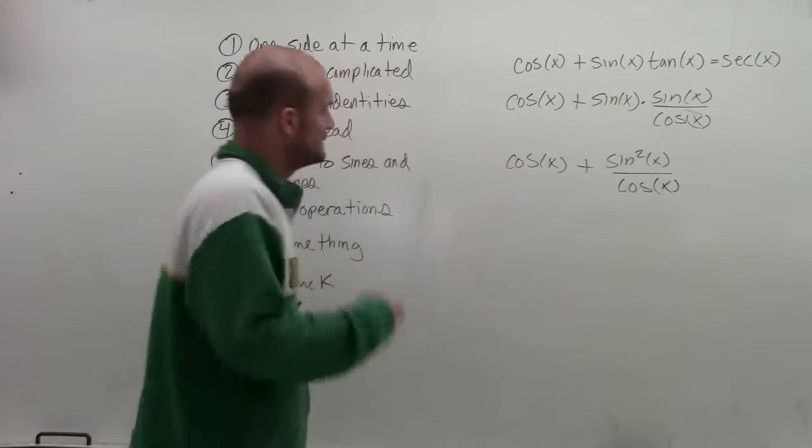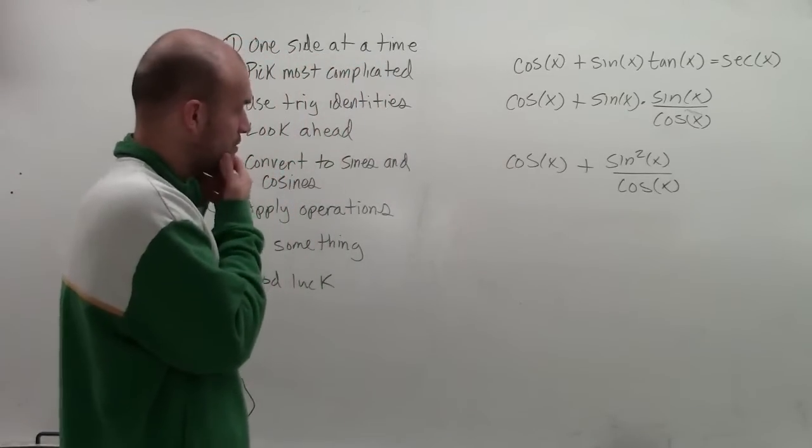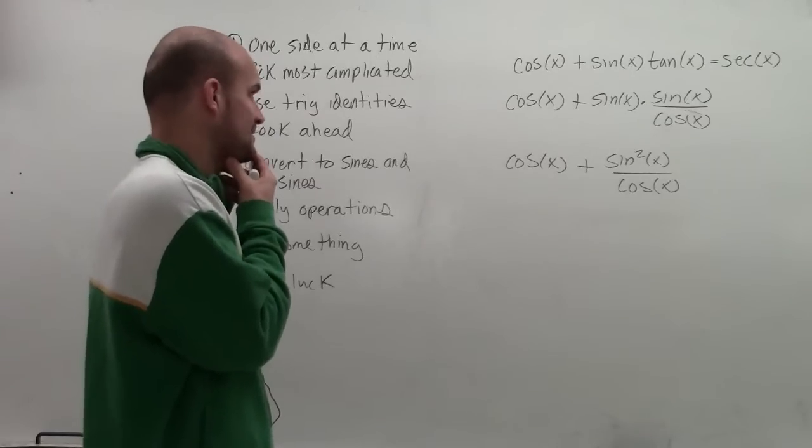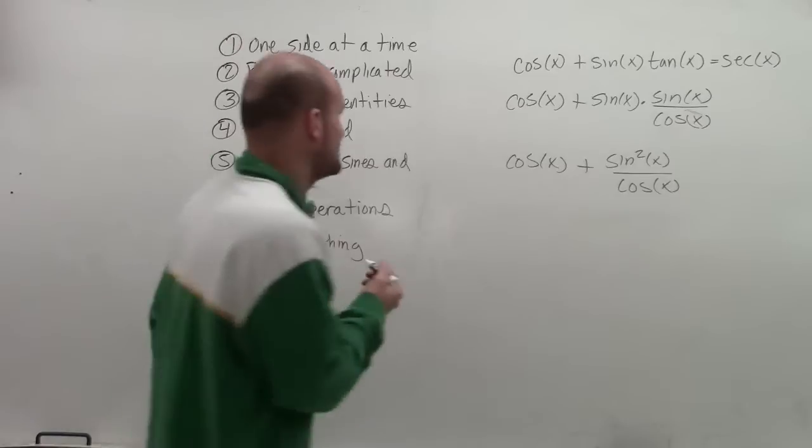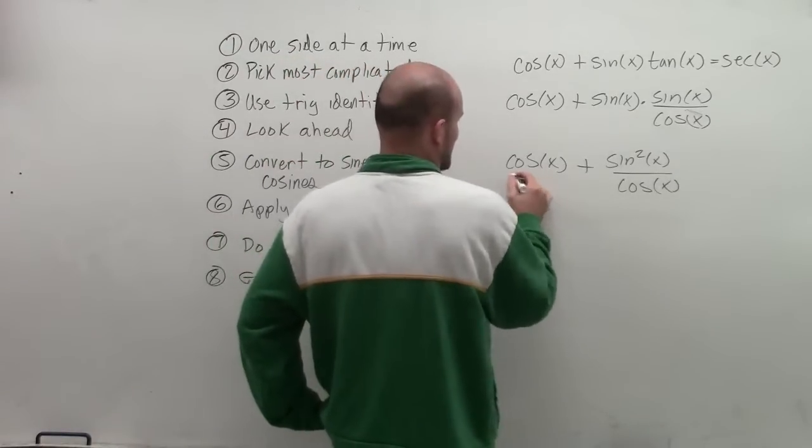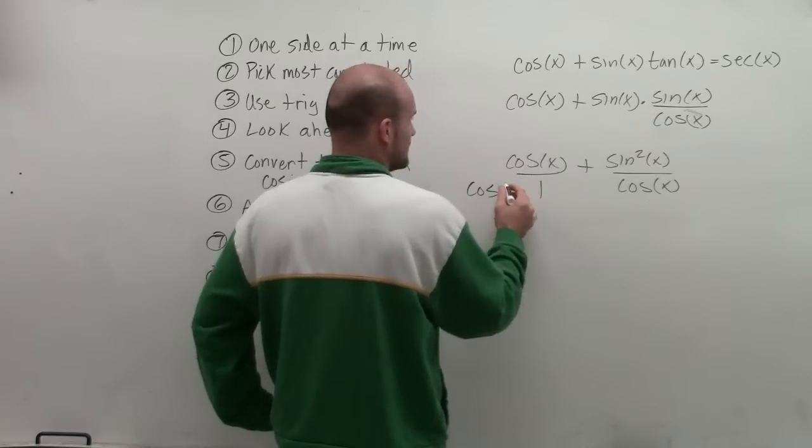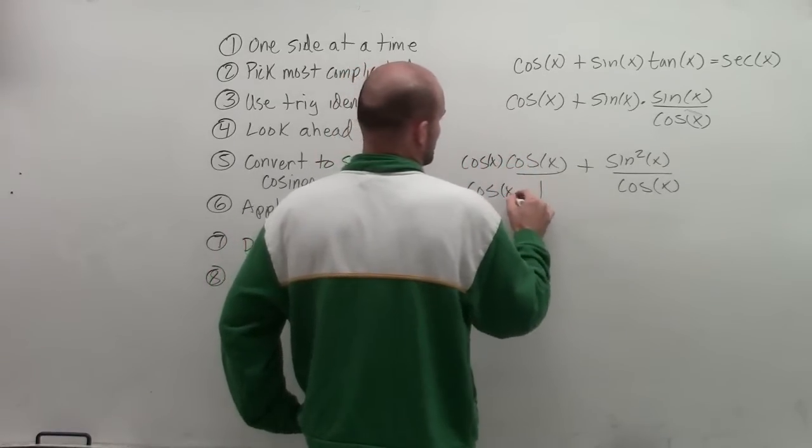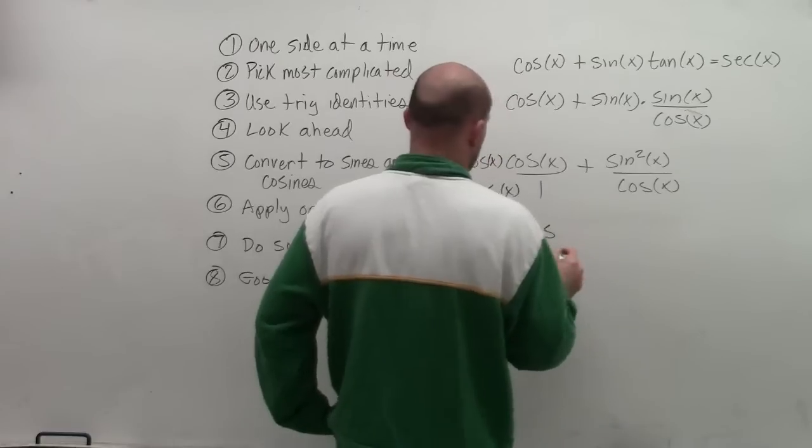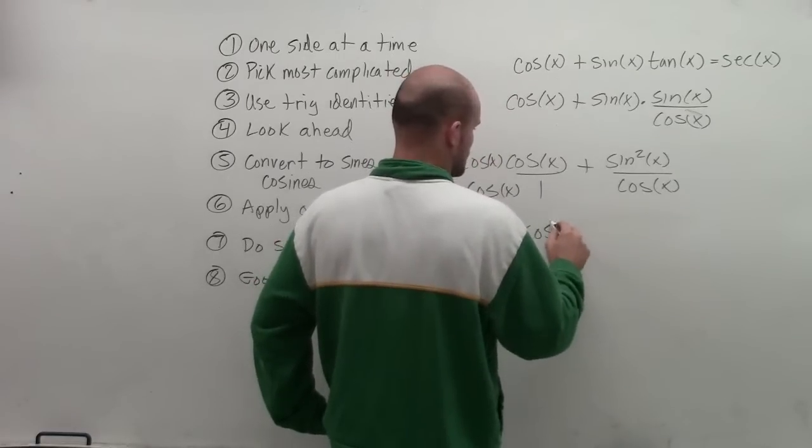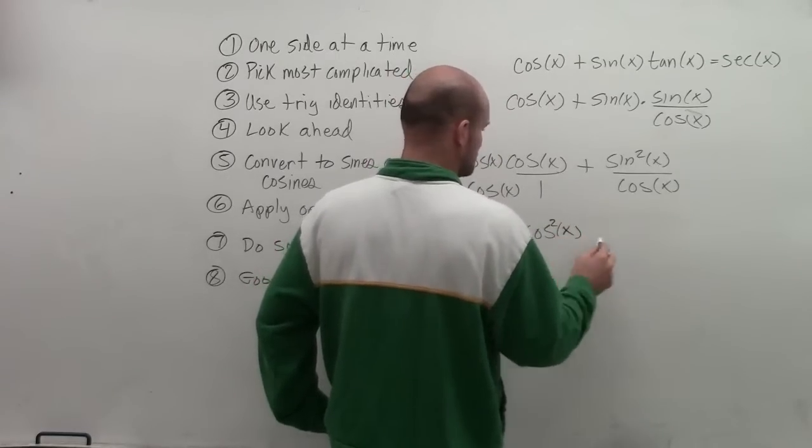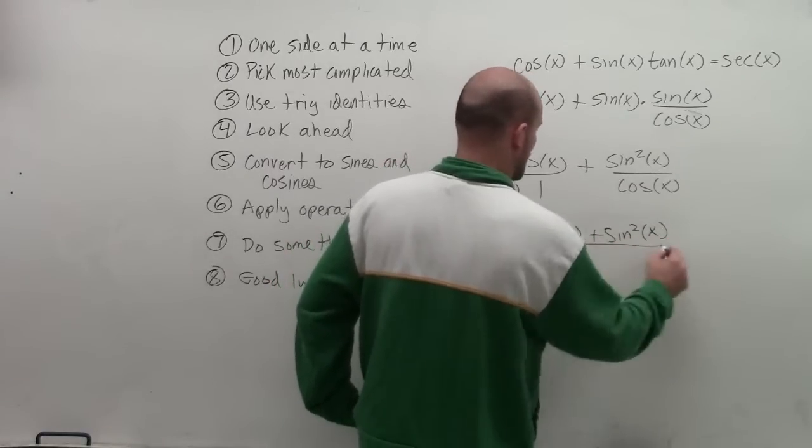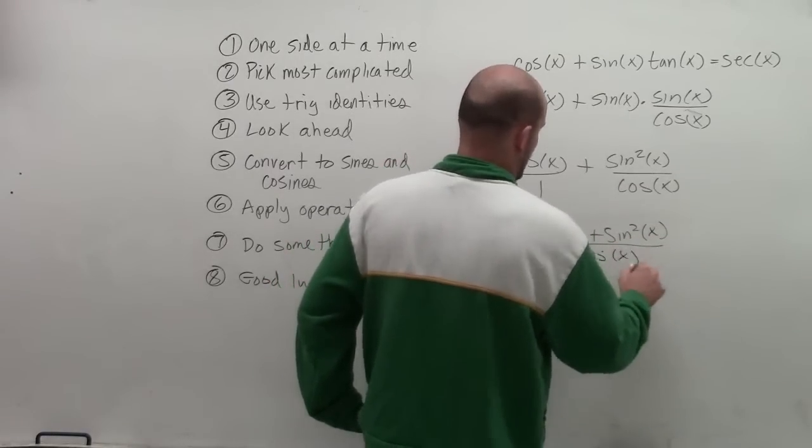All right? So seems like we're getting a little crazy here. Next step that I might want to do is, well, I could combine like terms to get them to be the same. So I could multiply, since this is over 1, I could multiply by cosine over cosine of x. Therefore, that would give me cosine squared of x plus sine squared of x all over cosine of x.